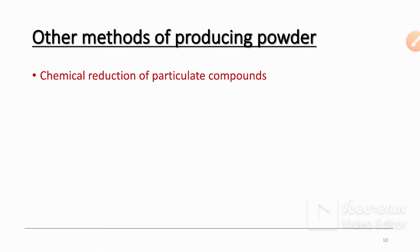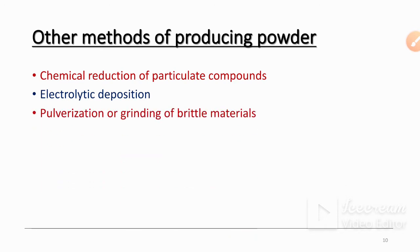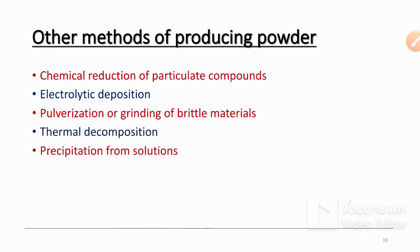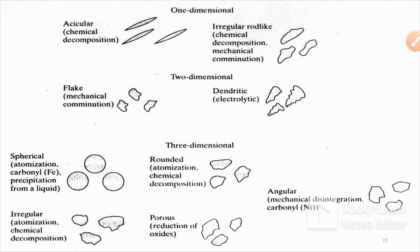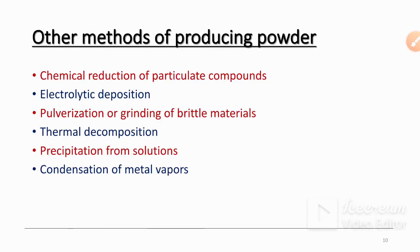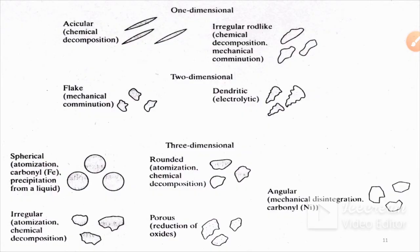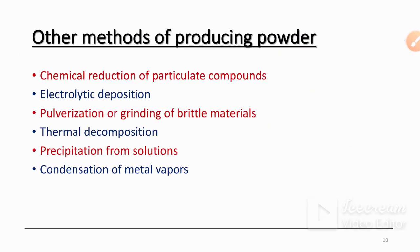Some other methods of powder preparation include chemical reduction of a particular compound, electrolytic deposition, pulverization or grinding of brittle materials, thermal decomposition, precipitation from solution, and condensation of metal vapors. These are some commonly used techniques to produce powder.